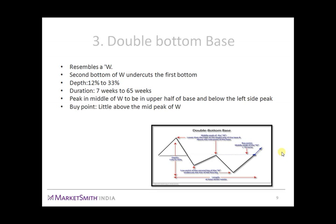This pattern can also set the stage for huge price gains like the other two patterns discussed previously. The depth of the base or correction should range from 12% to 33%. Duration of the base should be 7 weeks to 65 weeks. The peak in the middle of the W should form in the upper half of the base and should be below the left-side peak. The buy point is when the stock crosses the most recent area of resistance — the peak in the middle of the W — with at least 40 to 50% above-average volumes, and the buying range is up to 5% above the ideal buy point.